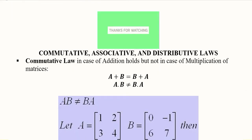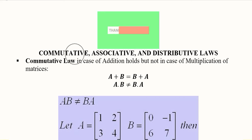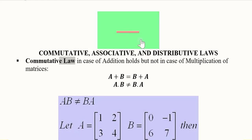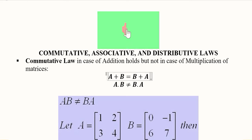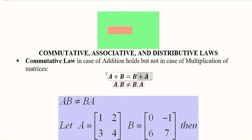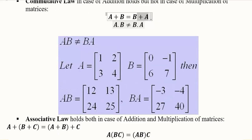Now we continue with matrix operations and observe the various laws of matrices: commutative, associative, and distributive. For the commutative law, we reverse the order of the two matrices and see if the answer remains the same. For addition, a + b equals b + a, so the commutative law holds. However, for multiplication, reversing the order does not give the same result — a·b is not equal to b·a.